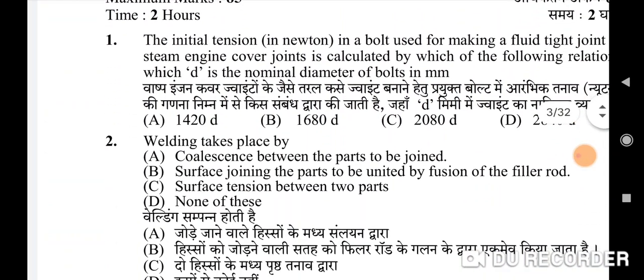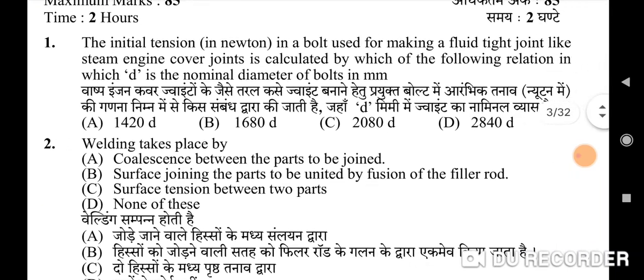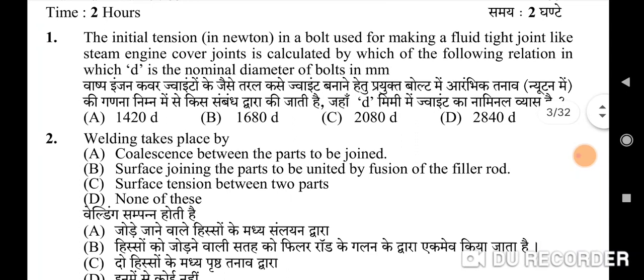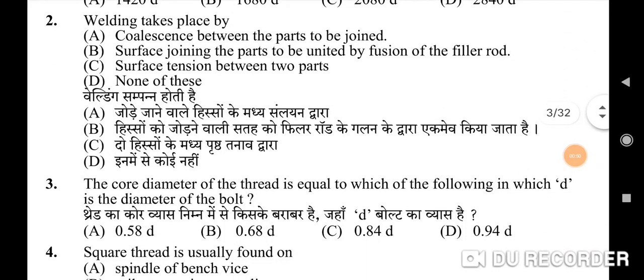The first question: the initial tension in Newton in a bolt used for making a fluid-tight joint like steam engine cover joints is calculated by which of the following relation, in which d is the nominal diameter of bolts in mm. The correct option is D: 2840d.